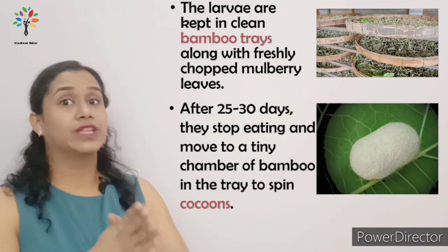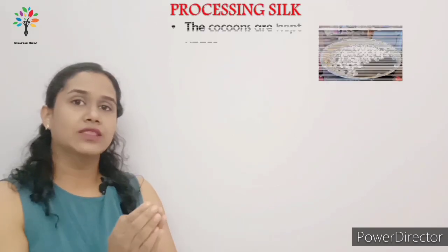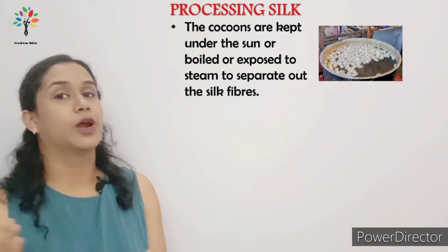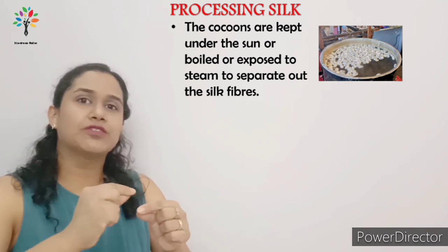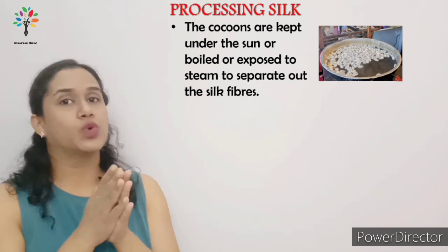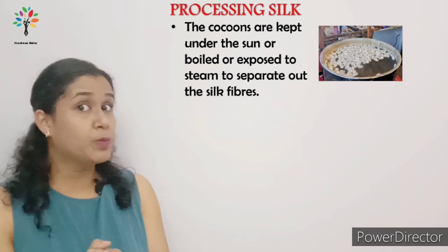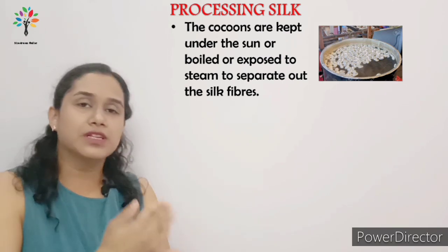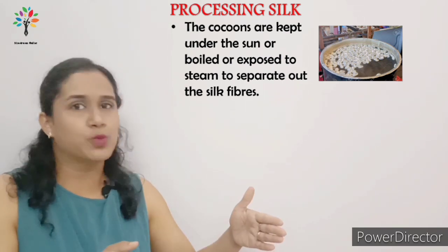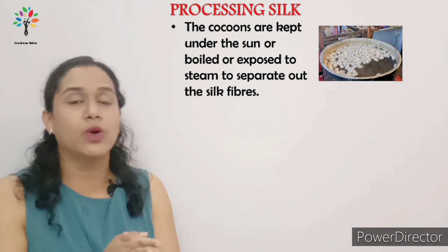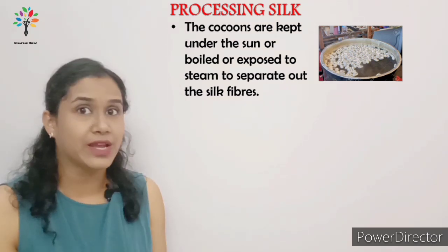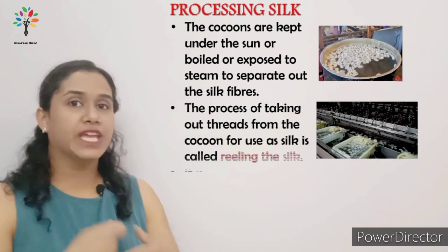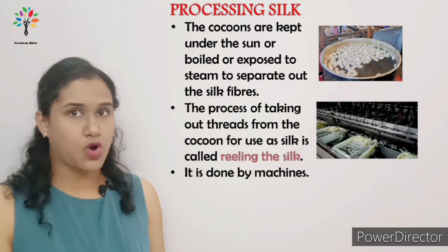Once the cocoon is formed, the next step is the processing of the silk. These cocoons are collected and kept under the sun, or they are boiled or steamed. The silk fibers then separate out. The pupa inside is now dead. The process of taking out the silk fibers from the cocoon is called reeling.